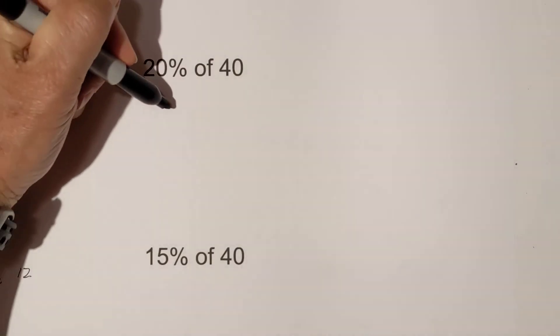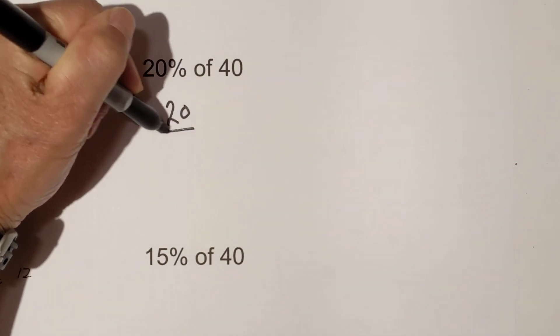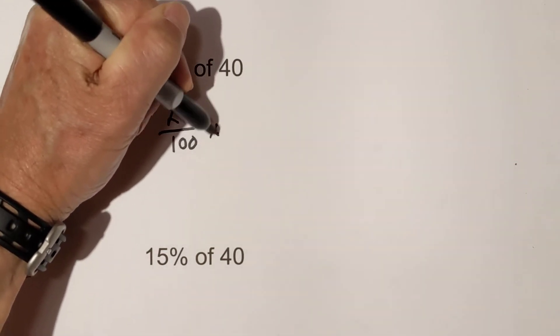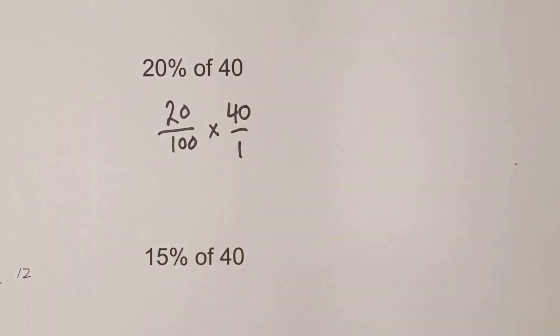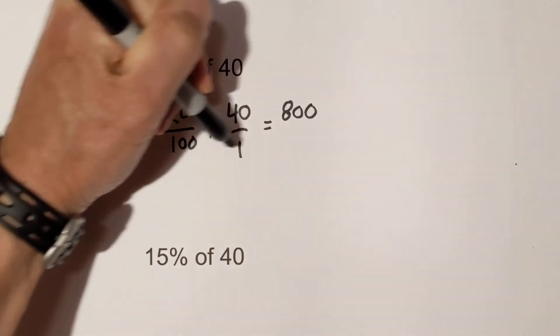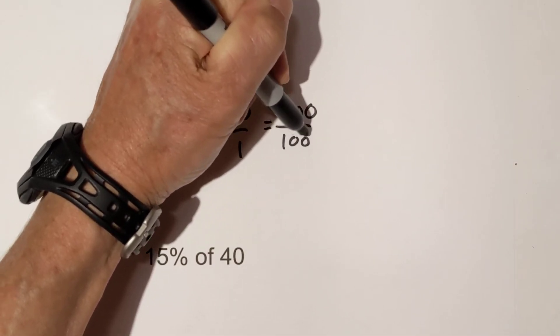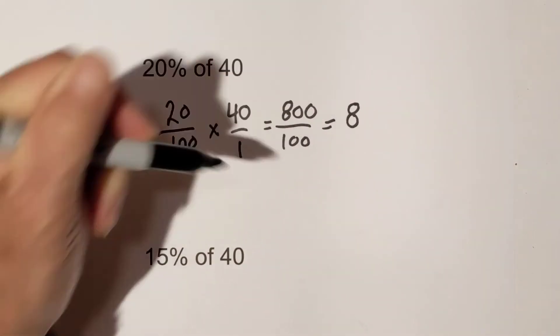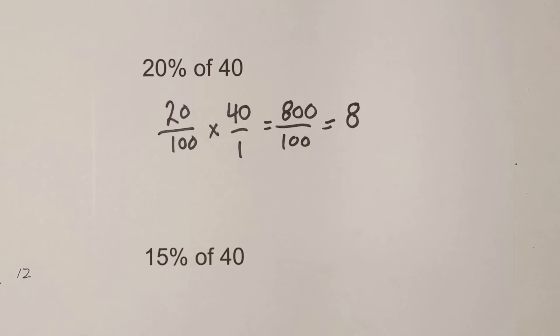Let's work a couple more. Okay let's try 20% of 40. Like I've done in all of these, we have 20 over 100 times 40 over 1. 20 times 40 equals 800. 100 times 1 is 100. When you simplify that equals 8. 20% of 40 is 8.